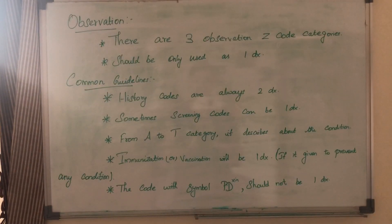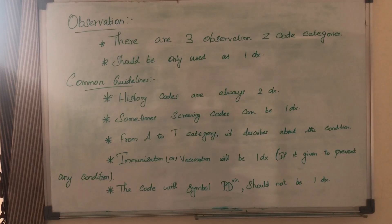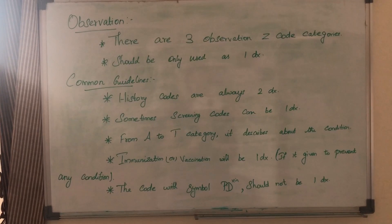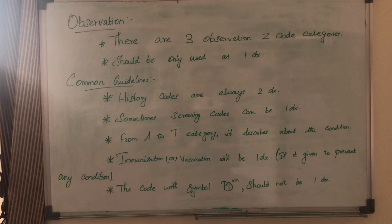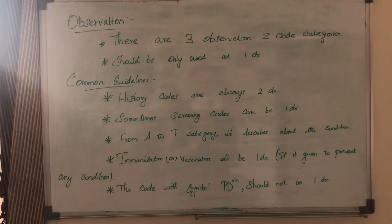Observation codes: we have three Z-category observation codes, and in these observation codes we use principal diagnosis. For history codes, secondary diagnosis is common. Screening codes are sometimes used as principal diagnosis. The A2T code category describes one condition. Immunization and vaccination is one condition — to prevent disease — and when it is part of a routine outpatient visit, it can be used as a secondary diagnosis.